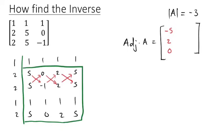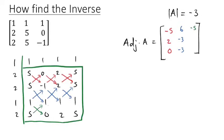For the second column, using blue — same procedure. Five times one is five; five minus negative one gives us positive six. Then negative one minus two gives us negative three. Two times one is two; two minus five is minus three. For the third column, using green: zero times one is zero; zero minus five is minus five. This times this is two; two minus zero is simply two. Then five times one is five; five minus two is positive three. So that's the adjoint.